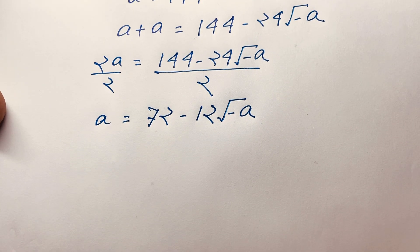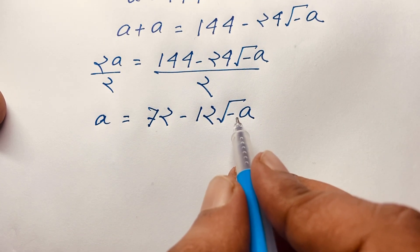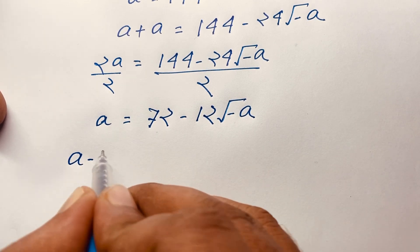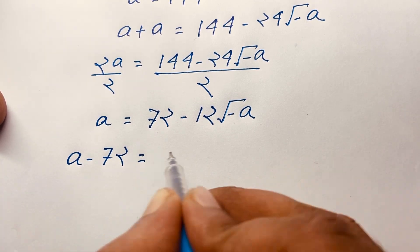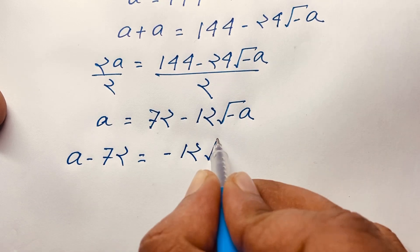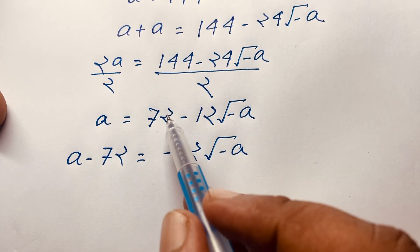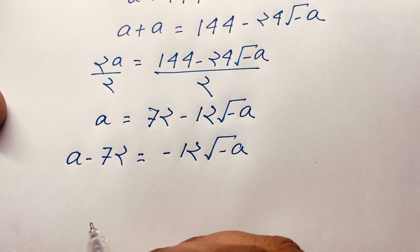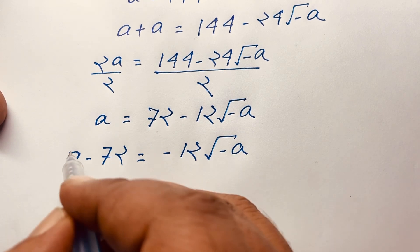At this moment, if I want to find out the value of A, I move this value to this side: A minus 72 equals negative 12 square root negative A. I just move this positive value to this side, so it becomes negative. Again, I take both sides whole square.